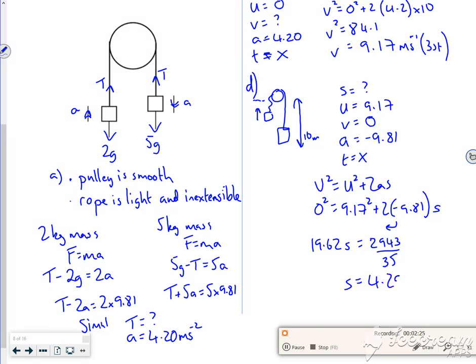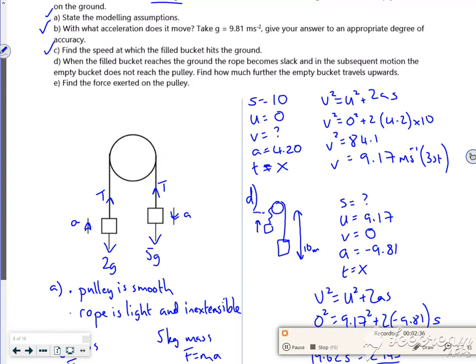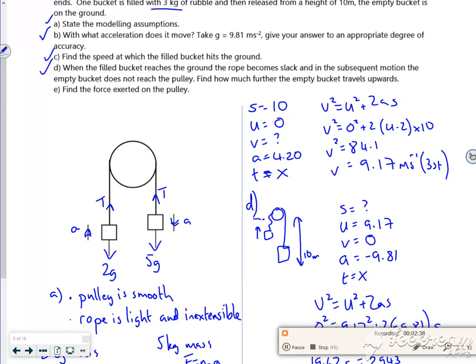it gets me roughly 4.29 meters. So it travels an extra 4.29 meters above. But it doesn't hit the pulley, so the pulley must be above 14.29 meters. And then the next bit talks about the force exerted on the pulley.